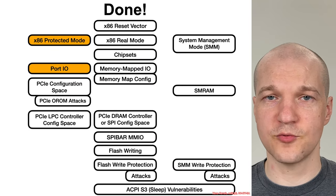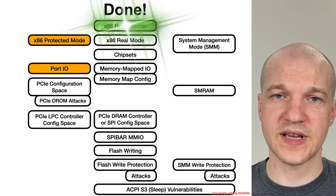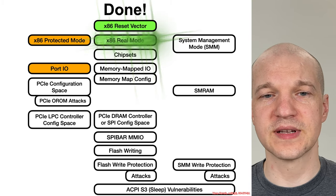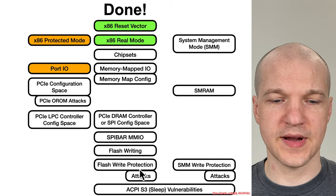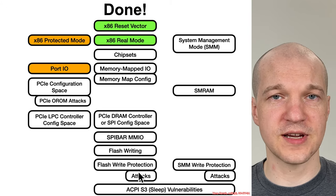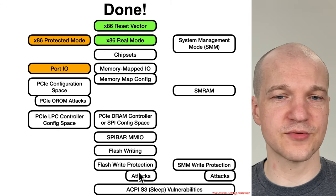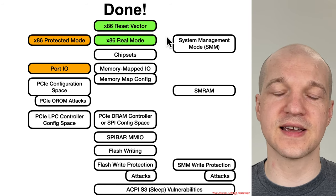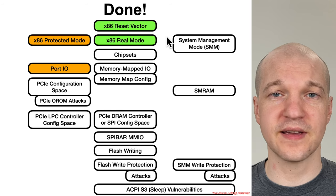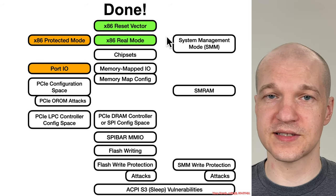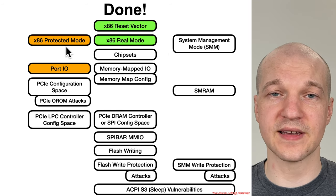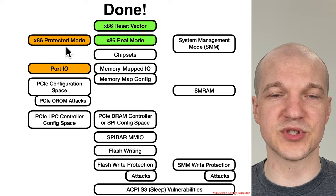So that's all we're going to talk about for reset vector and real mode. We're on our way down to find out more about flash write protection. That was just the beginning of what we need to know to understand how the BIOS gets started and why it doesn't necessarily stay in real mode, moving on to things like x86 protected mode.